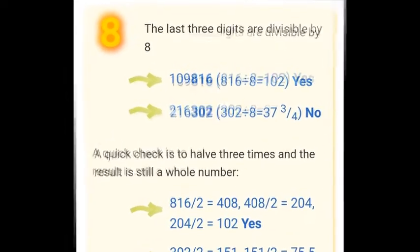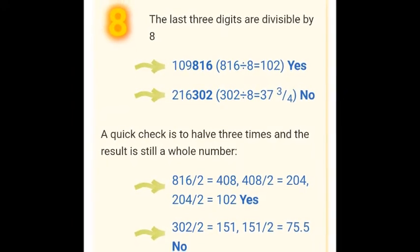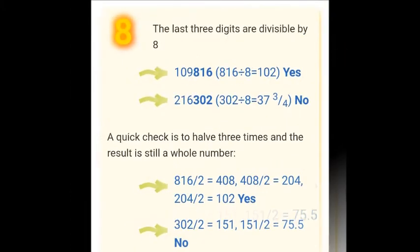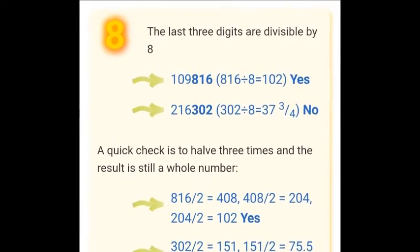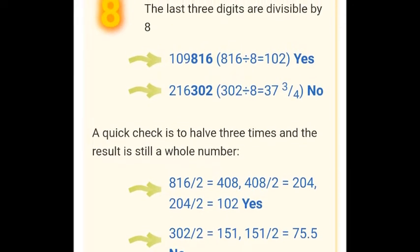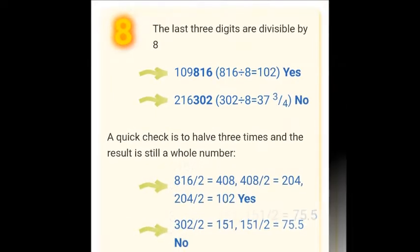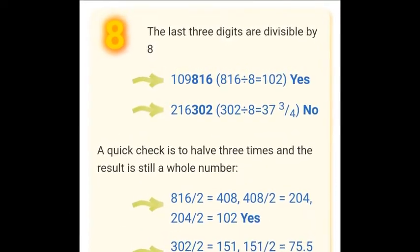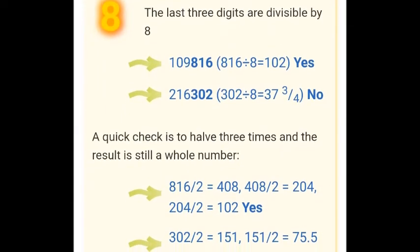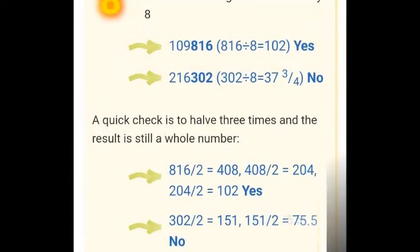There is an alternative rule that is interesting and easy: halve the number three times; if the result is still a whole number, the number is divisible by 8. Take 816: half is 408, half again is 204, half again is 102 — a whole number, so 816 is divisible by 8. Take 302: half is 151, half again is 75.5 — not a whole number, so 302 is not divisible by 8.